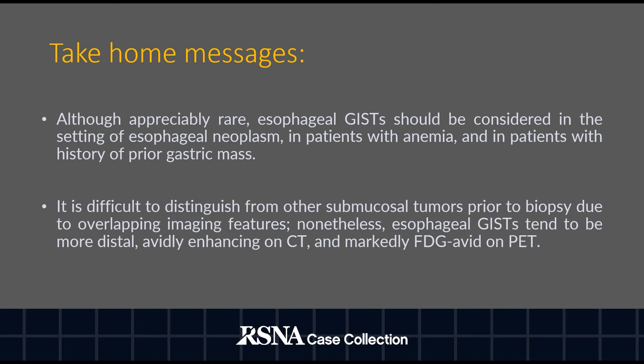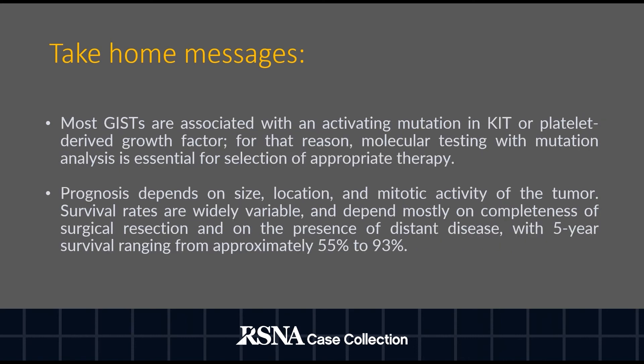It is difficult to distinguish esophageal GIST from other submucosal tumors prior to biopsy due to overlapping imaging features. Nonetheless, esophageal GIST tends to be more distal, avidly enhancing on CT, and markedly FDG-avid on PET. Most GISTs are associated with an activating mutation in KIT or platelet-derived growth factor receptor, and molecular testing with mutation analysis is essential for selection of appropriate therapy.